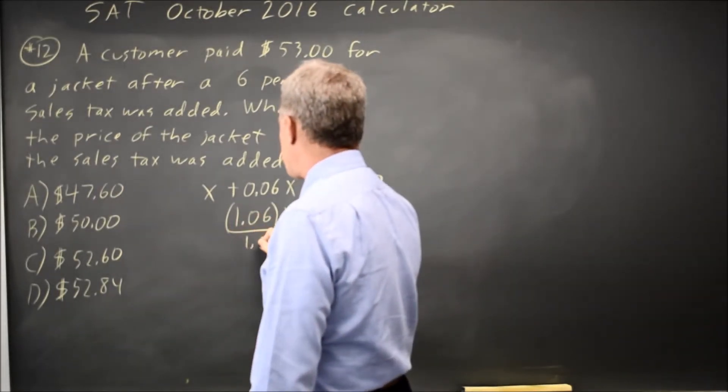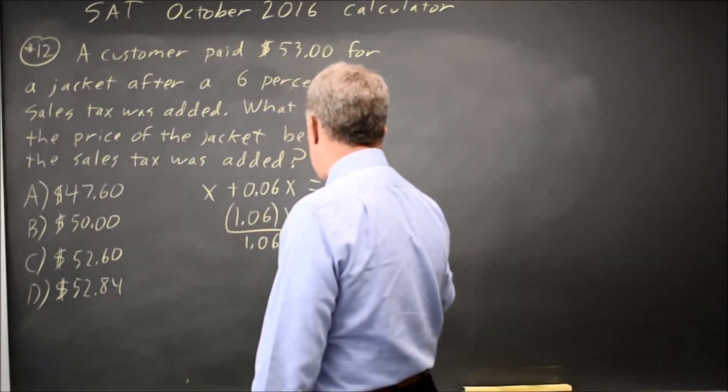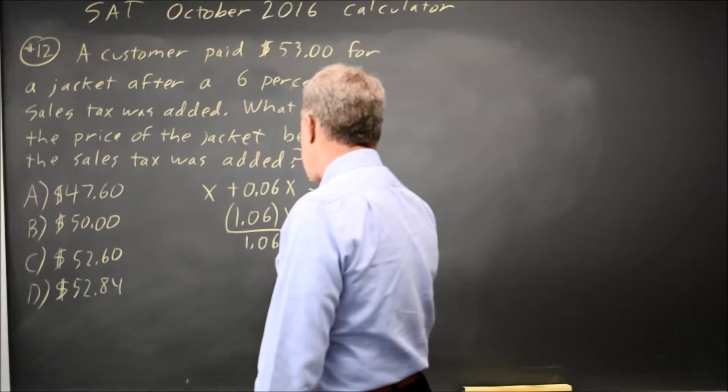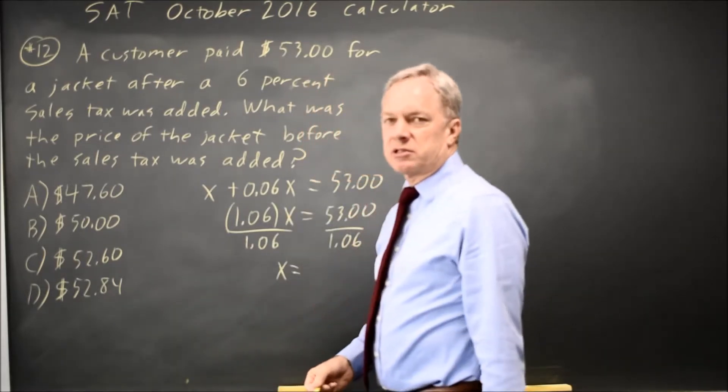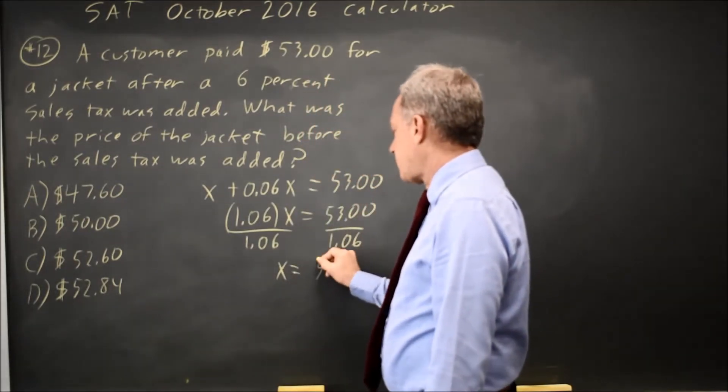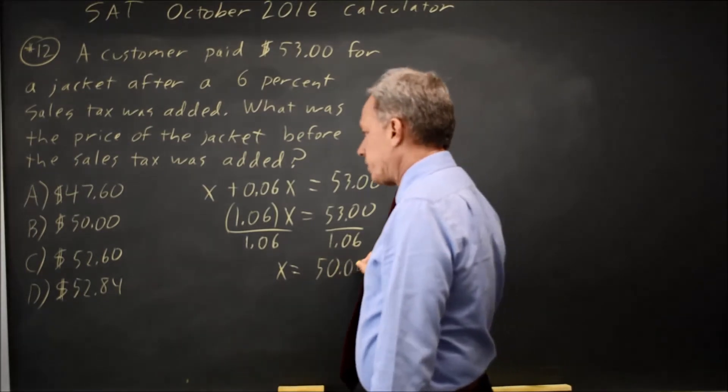Divide both sides by 1.06. And X equals 53 over 1.06, which your calculator will tell you is exactly $50. Choice B.